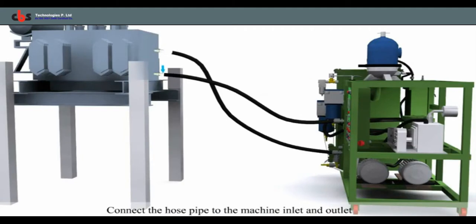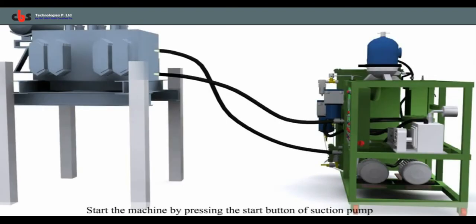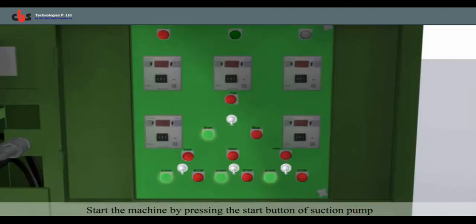Connect the machine outlet hose pipe to transformer outlet port. Open the control panel then start the machine by pressing the toggle switch.